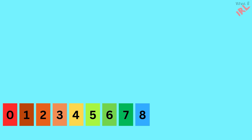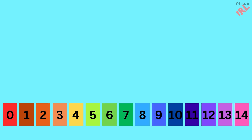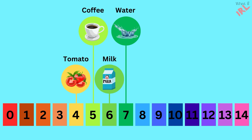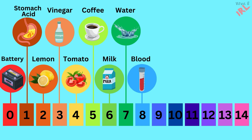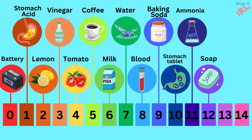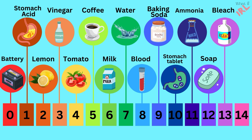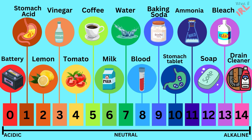Here is the scale for acid and base. Numbers from 0 to 14. Number 7 is neutral — that is water. As we go from 6 to 0, it becomes more acidic. Like milk has the least acid, and the battery is the most acidic. On the other side, as we go up the numbers, it becomes more basic, more alkaline. For example, blood is the least basic and the drain cleaner is the most.